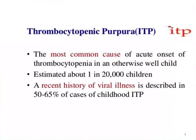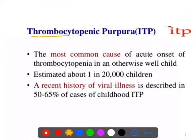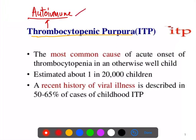Today we will discuss thrombocytopenic purpura. It is an autoimmune disease in which auto-antibodies are formed against our platelets. It is of two types: primary and secondary.